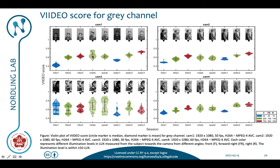The rotate and speak test was also conducted at around 200 lux, and then for the static tests we again had 40 lux, 200 lux, and 700 lux. You can see that the higher the light intensity, the higher the video score. This pattern is actually present for essentially all the cameras. This third camera here shows much smaller variation.